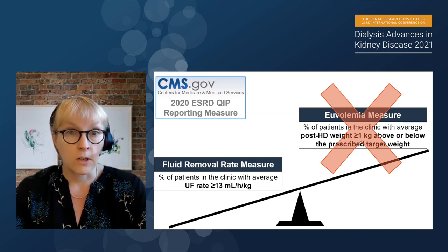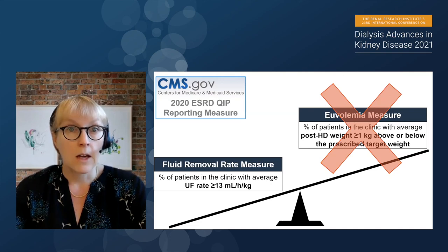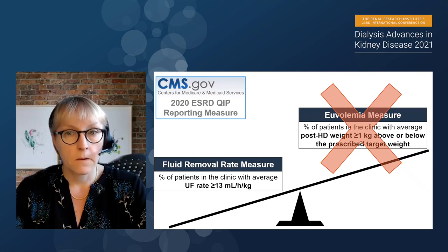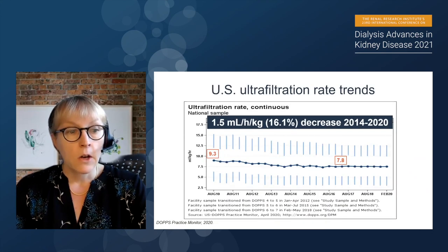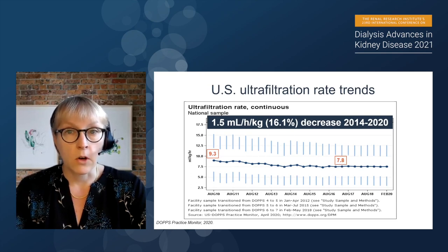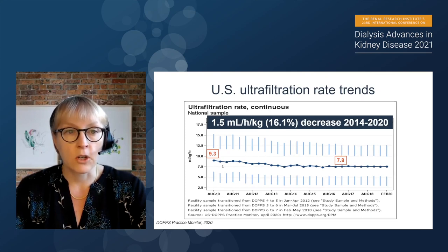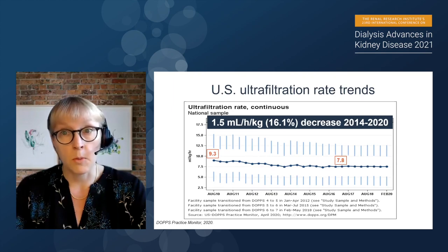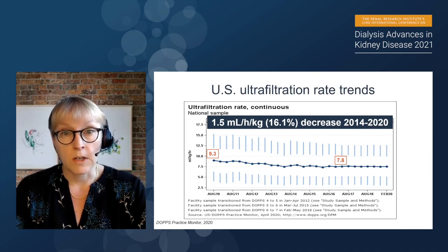This left us somewhat out of balance — asking clinics to focus on ultrafiltration rates without a counterbalance ensuring patients reached their dry weight at the end of dialysis. The concern over time is that this could lead patients to become volume expanded if people focused on UF rates without paying adequate attention to volume status. So that was in 2004. What's happened since then?